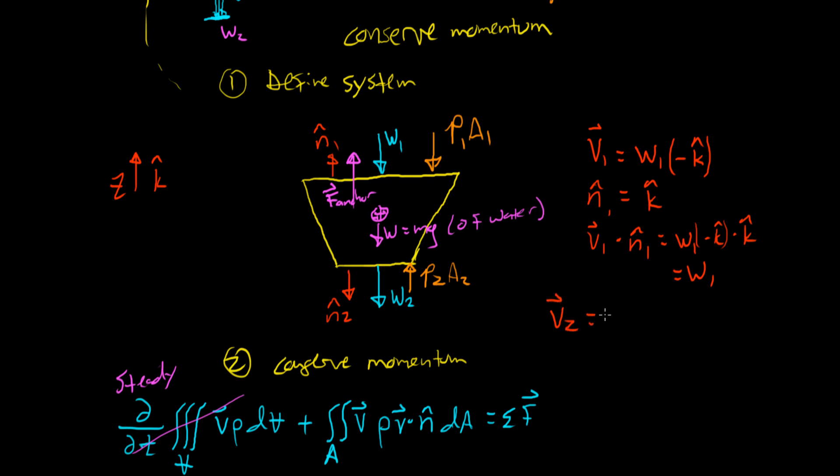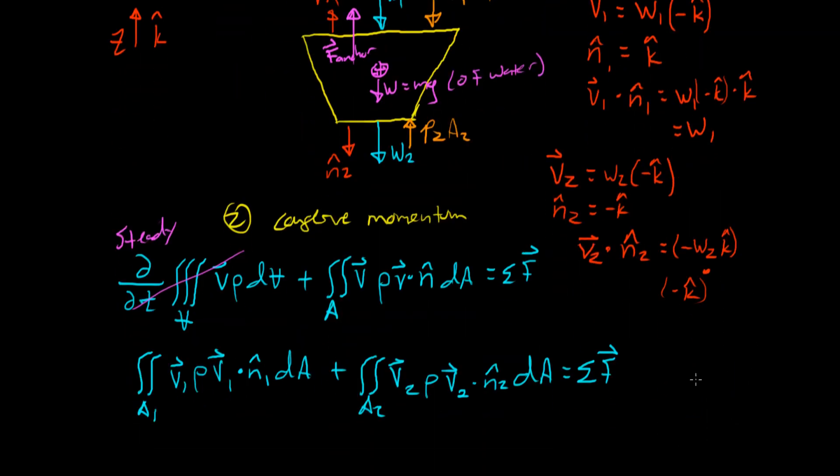V2 is equal to W2 because it's pointing magnitude here. And it's pointing downward. It's in the minus K hat direction. But N2 also points down. So N2 is equal to minus K hat, which means V2 dotted with N2 is equal to a minus W2 K hat. And that's being dotted with a minus K hat to give us just a positive W2.